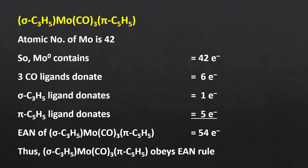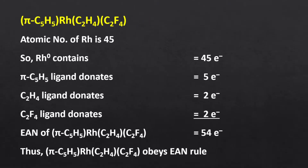The atomic number of rhodium is 45 and there is no charge on the complex, so the oxidation state of rhodium is 0 and rhodium will contribute 45 electrons. Both alkyne and tetrafluoroethylene are flexible ligands that can donate either 4 or 2 electrons depending on the complex requirement to show stability. Therefore, in this case, these two ligands will also act as 2 electron donors to make this complex stable.